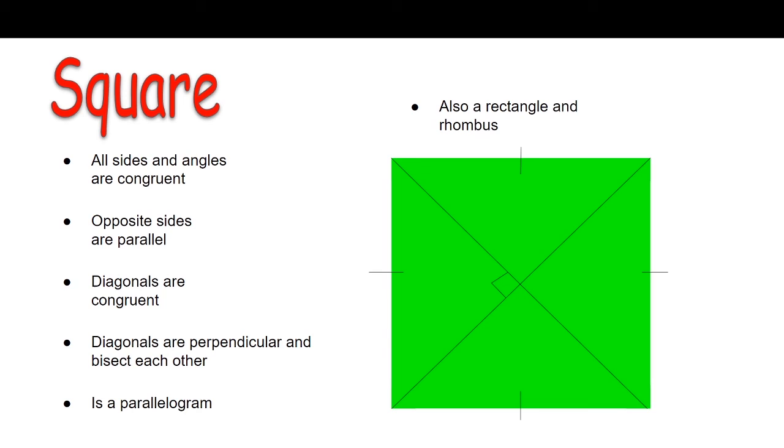And the last special property of a square is that they are also considered a rectangle and a rhombus. They meet the properties of those special quadrilaterals as well. So a square is a special case indeed. Sometimes it can be kind of confusing, but stick to these properties, stick to these facts, and you should be able to distinguish a square.